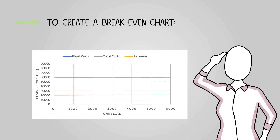In conclusion, to create a break-even chart: draw fixed costs with a horizontal line at their identified level; draw variable costs starting from the fixed costs height and rising diagonally based on variable costs per unit to form the total costs line; and draw the revenue line beginning at the origin and ascending diagonally based on the sales price per unit.